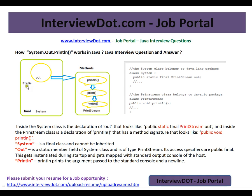If we have a final class and there is a variable called out which is marked as static, out is a static member field of the System class and is of type PrintStream. Its access specifiers are public and final. This gets instantiated during startup and gets mapped with the standard output console of the host. The println method prints the argument passed to the standard console along with a new line.